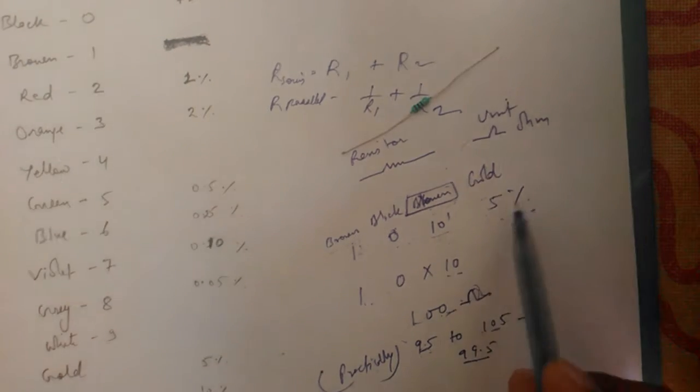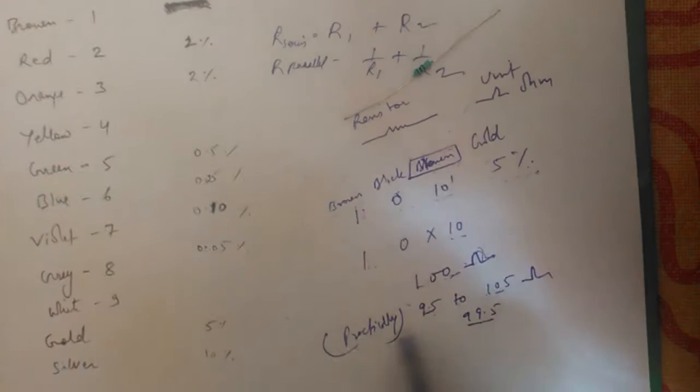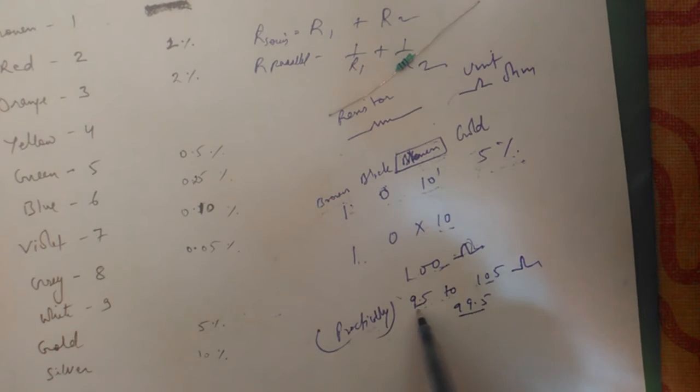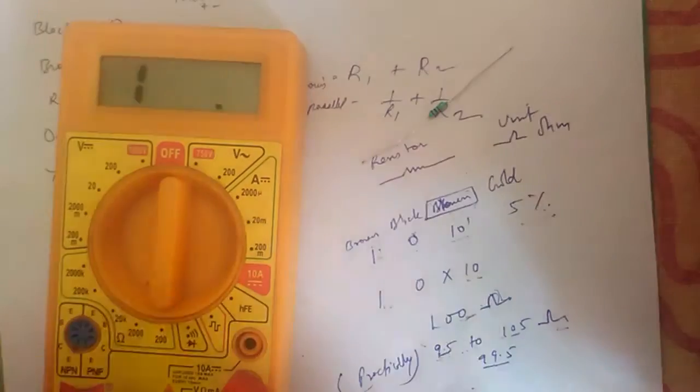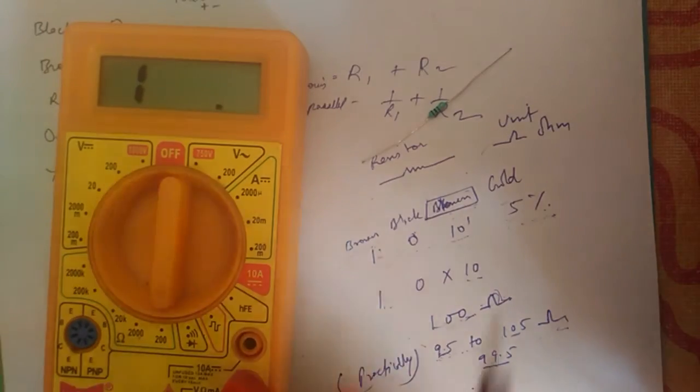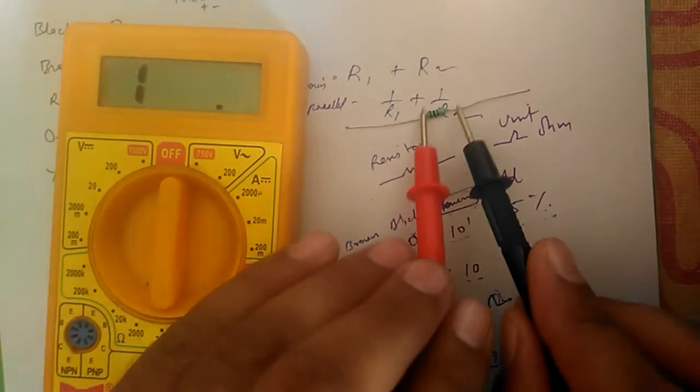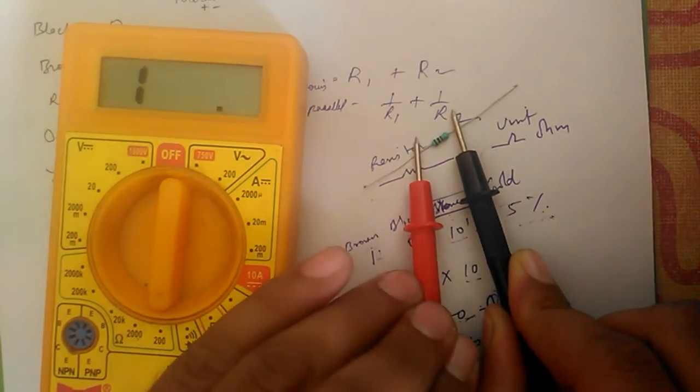Practically, this 5% is the tolerance, so when we measure practically, this value will come in between 95 to 105 ohm, 5% less and more. So we can check it by this multimeter. We have to set it on 200 ohm. It has no polarity, so we can connect it directly.